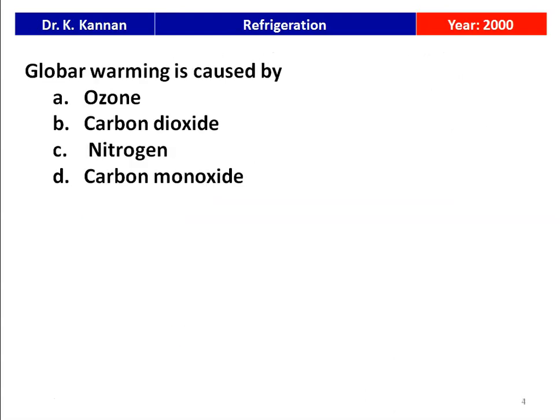The next question is also from 2000. Global warming is caused by ozone, carbon dioxide, nitrogen, or carbon monoxide. This is a simple question — global warming is caused by carbon dioxide. Carbon dioxide has major emission contributions from automobiles; wherever there is combustion, CO2 is generated. Particularly in the case of automobile emissions, CO2 contribution is more. So, global warming is caused by carbon dioxide.